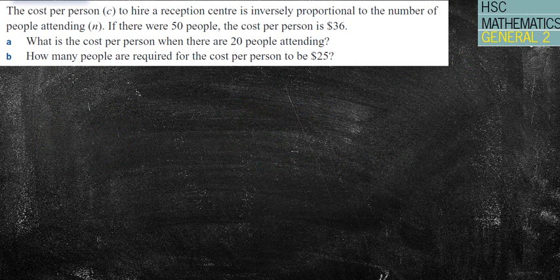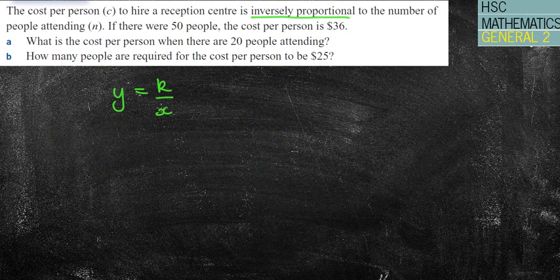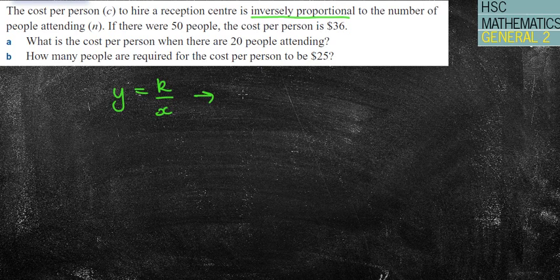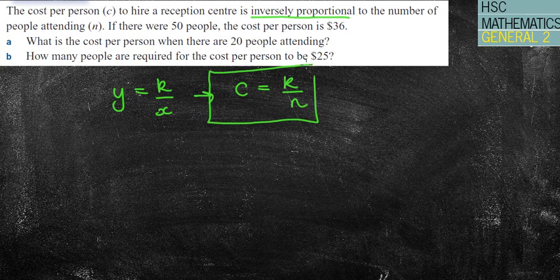The cost per person to hire a reception centre is inversely proportional to the number of people attending. So straight away I'm thinking y equals k over x. There's no squares or square roots. Instead of y, I'll put C equals k over n. That's my equation of variation without my k value.